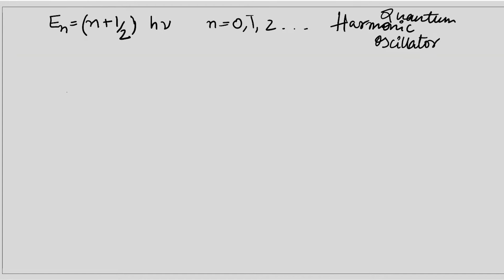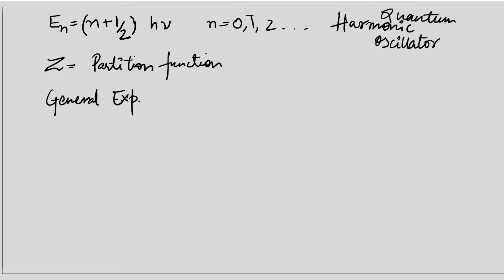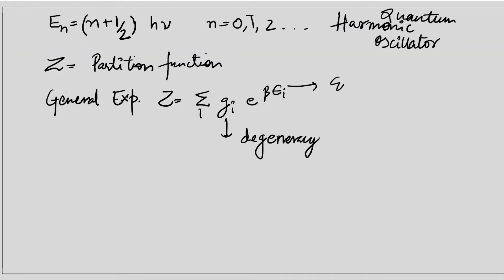We have to find Z, the partition function for this system. The general expression for the partition function is the summation over i of g_i times e to the power of negative beta times epsilon_i, where g_i is the degeneracy of that particular level i and epsilon_i is the energy level for that particular n.